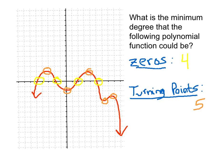So what is the minimum degree this could be? It can't be degree 2, because a degree-2 polynomial can have at most 2 zeros, and this function has four. For the same reason, it can't be degree 3 — a degree-3 polynomial can have at most 3 zeros, and this polynomial function has four zeros. So it can't be 3 either.